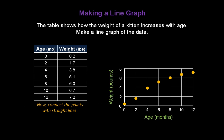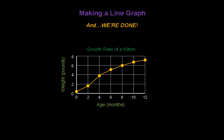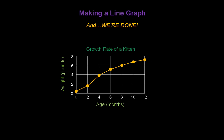Now the last thing we have to do is connect the points with a straight line. And don't forget to add a title for our line graph. We'll call this Growth Rate of a Kitten. And voila! We're done. You've created a line graph, the Growth Rate of a Kitten.